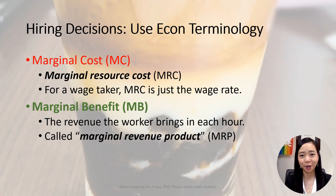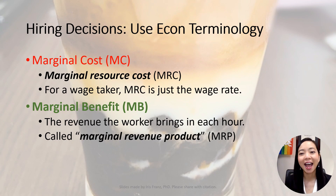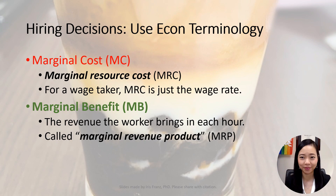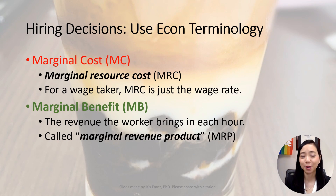The marginal benefit of hiring one additional worker is called the marginal revenue product, MRP. In plain English, marginal revenue product is: how much additional revenue will an additional worker bring to my firm? Or, if I hire one additional worker, how much additional revenue would this worker bring to my firm? There is a way to calculate the marginal revenue product, which I will explain in the next video, Hiring Decisions.